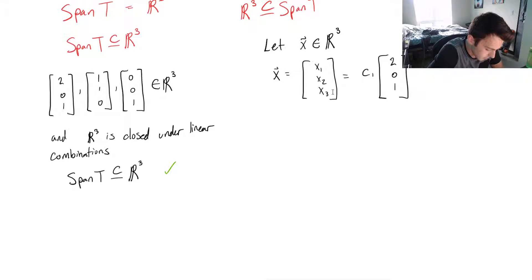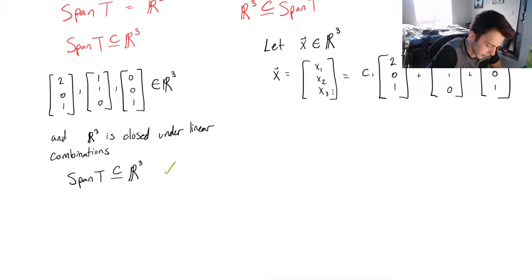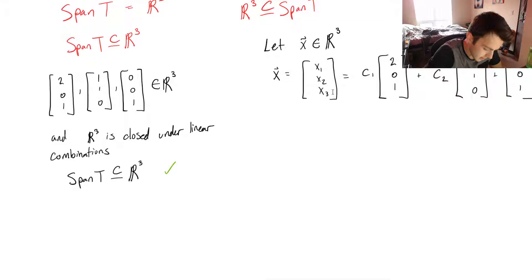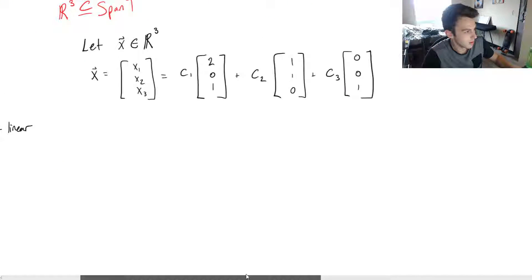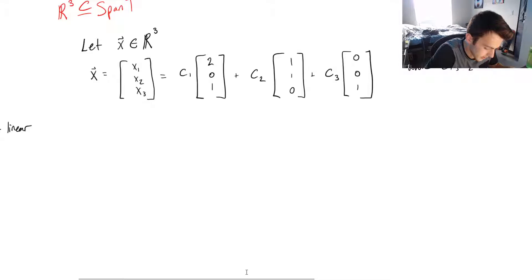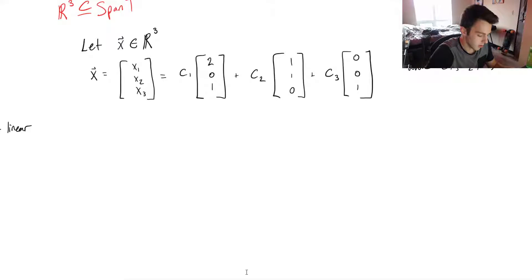We write: C1 times (2,0,1) plus C2 times (1,1,0) plus C3 times (0,0,1), where C1, C2, and C3 are all constants.